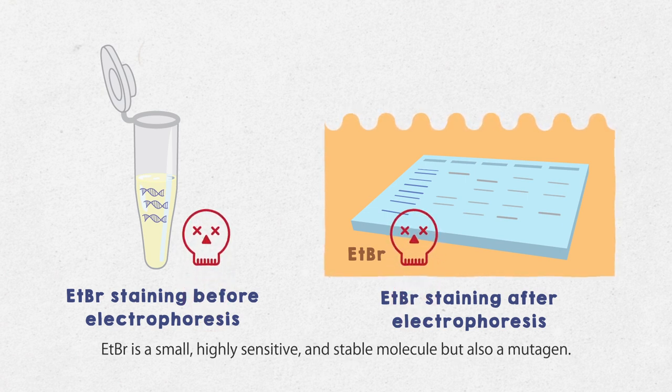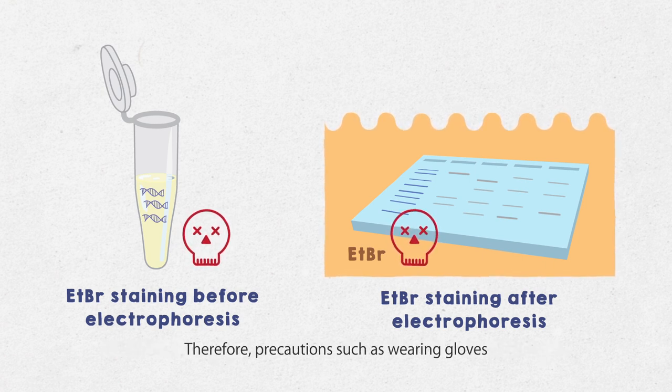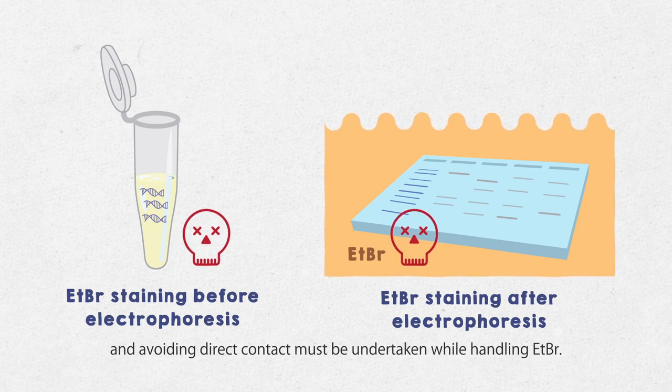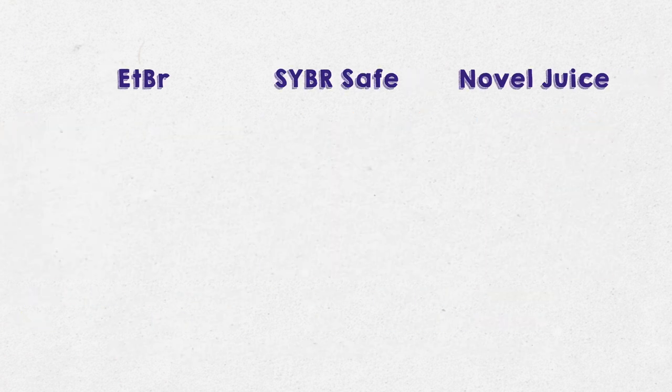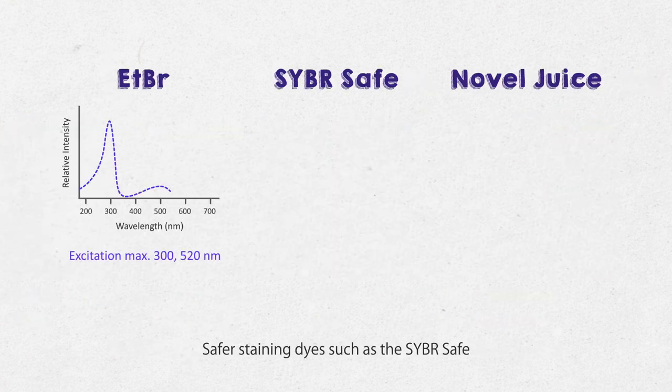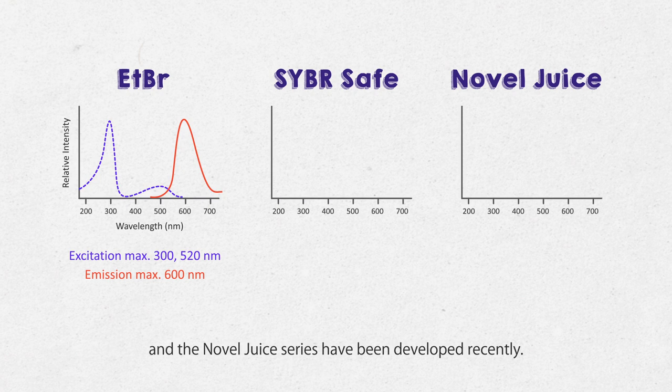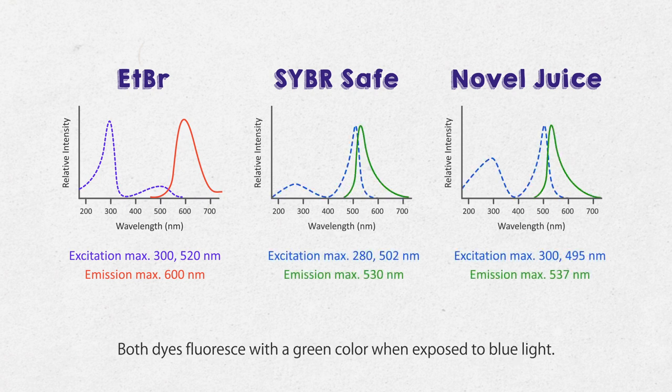EtBr is a small, highly sensitive and stable molecule but also a mutagen. Therefore, precautions such as wearing gloves and avoiding direct contact must be undertaken while handling EtBr. Safer staining dyes such as the SYBR Safe and the GelRed series have been developed recently. Both dyes fluoresce with a green color when exposed to blue light.